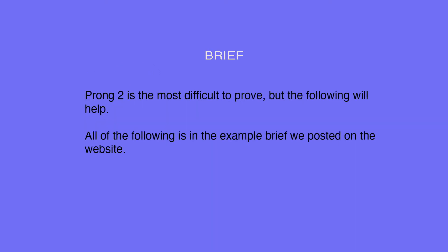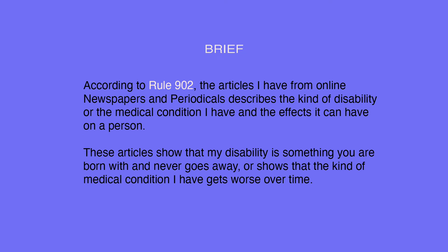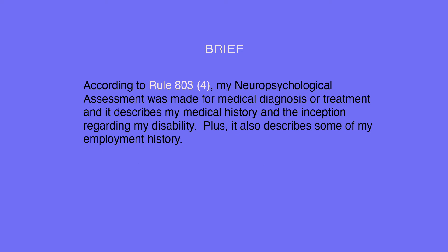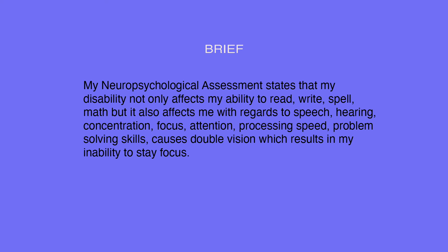Prong 2 is the most difficult to prove, but the following will help. All of the following is in the example brief posted on the website. According to Rule 902, articles from online newspapers and periodicals that describe the kind of disability or medical condition you have and its effects can be used. These articles show that the disability is something you are born with and never goes away, or that the medical condition gets worse over time. According to Rule 803-4, a neuropsychological assessment made for medical diagnosis or treatment describes your medical history and the inception of your disability. It also describes some of your employment history. The neuropsychological assessment states that the disability not only affects ability to read, write, spell, and math, but also affects speech, hearing, concentration, focus, attention, processing speed, problem-solving skills, and causes double vision, resulting in inability to stay focused.